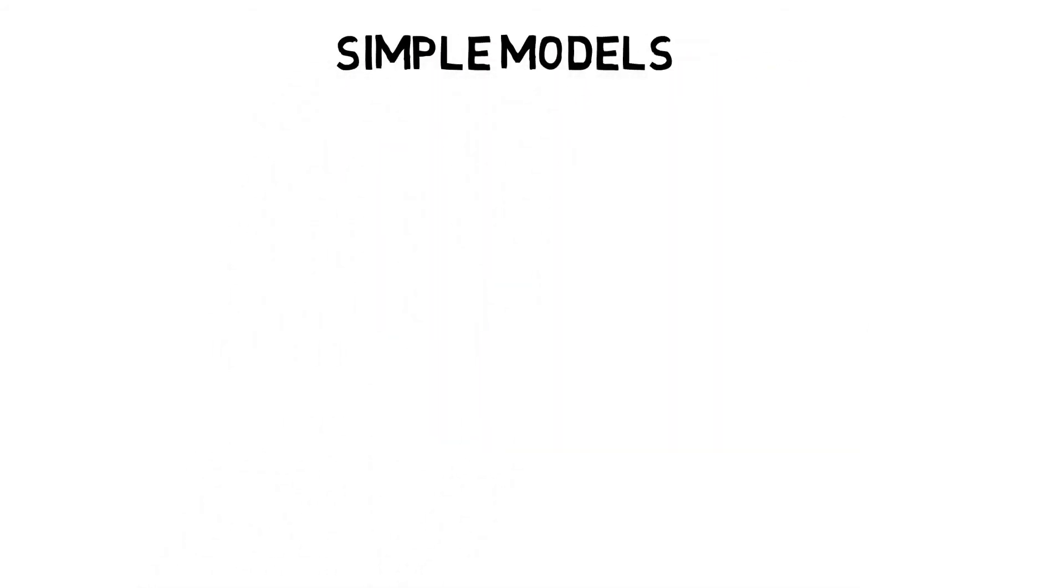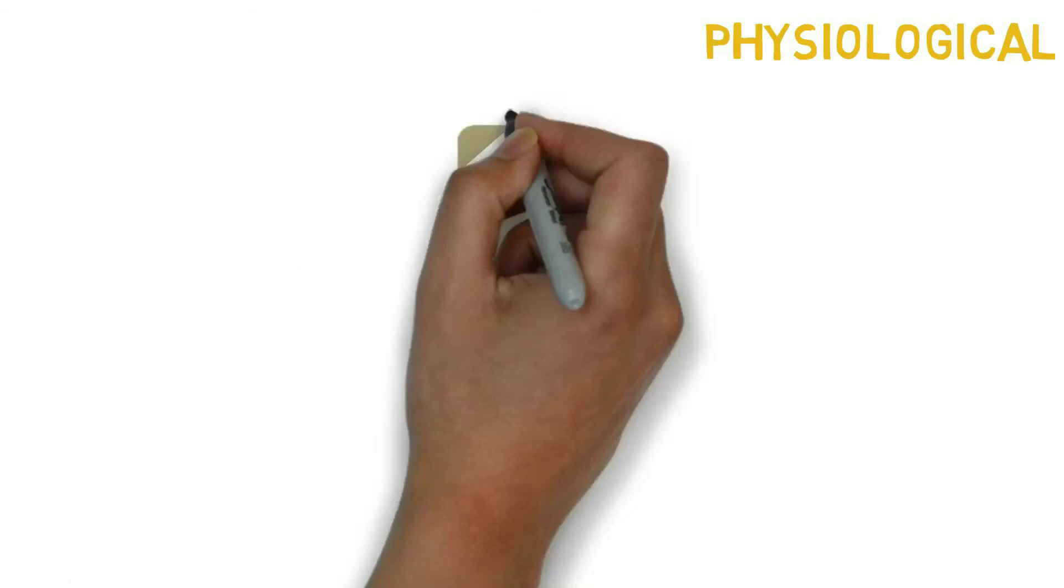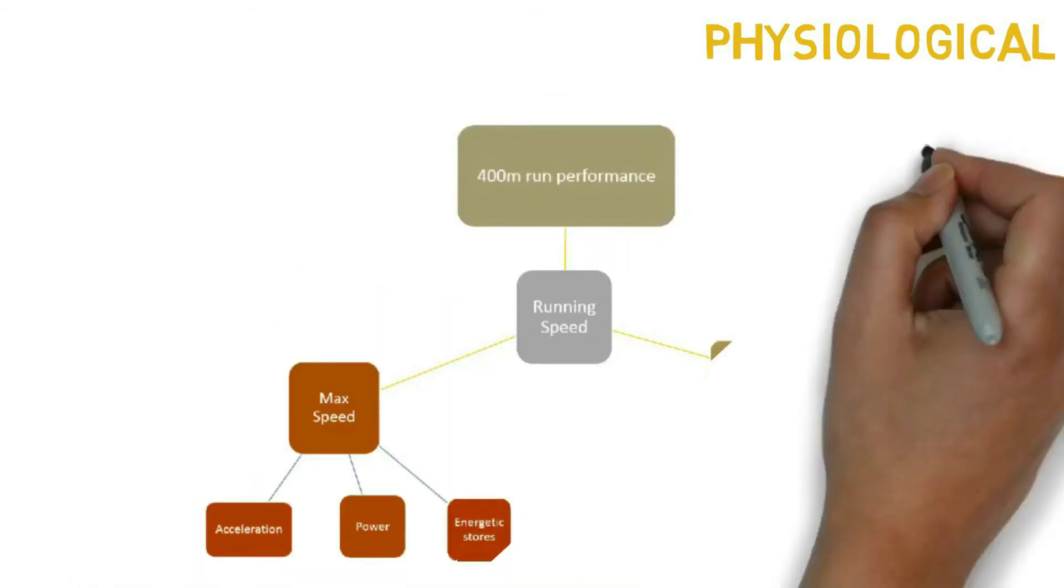So for you, a better aim might be to create a simple model. Think about what it is that you can control. So here I have an example of a physiological model, again on 400 metre run performance.